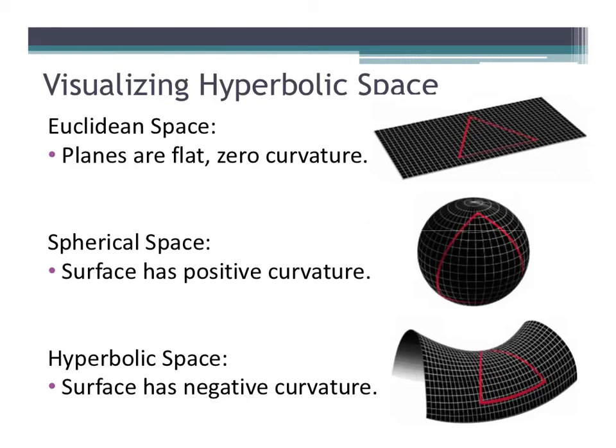If you think about Euclidean space, planes are flat, so planes in Euclidean space have zero curvature. Spherical space is different than Euclidean because its surface has a positive curvature. And hyperbolic space has negative curvature, and we'll discuss positive and negative curvature on the next slide.